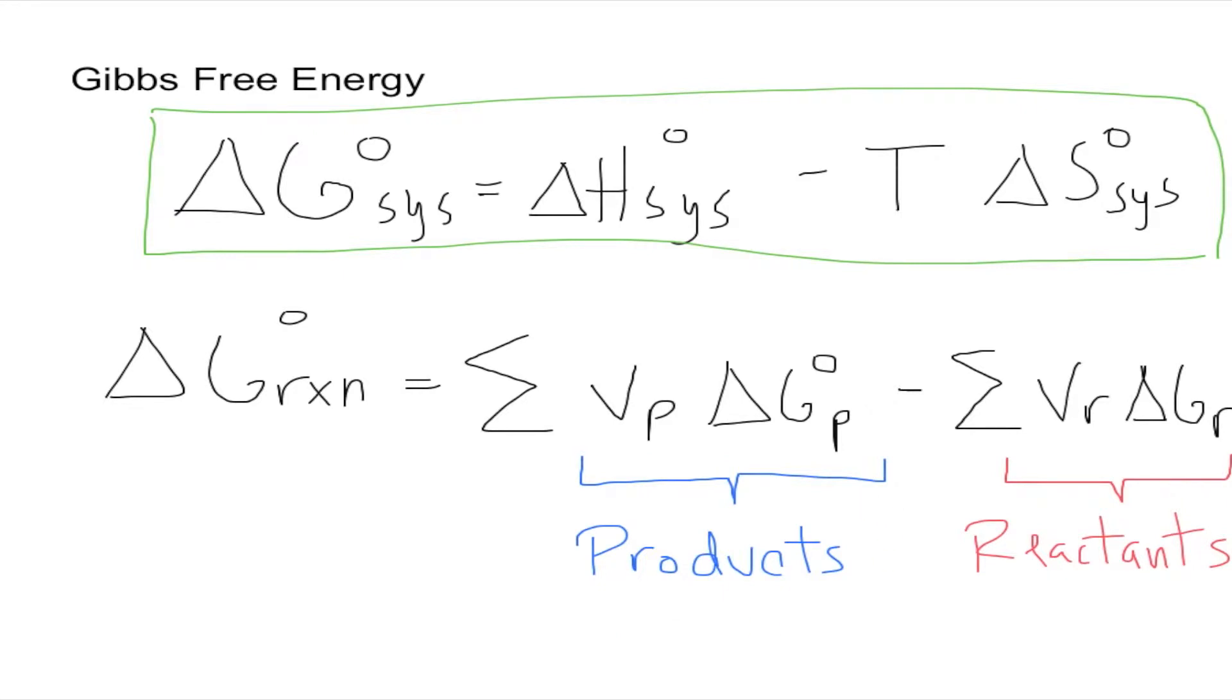minus the sum of the number of moles times the Gibbs free energy for the reactants. So it's pretty much the same calculation, but instead of enthalpy and entropy, we're just using Gibbs free energy values.